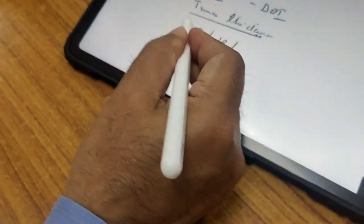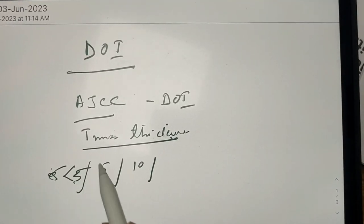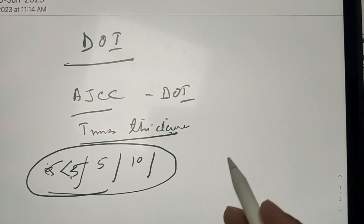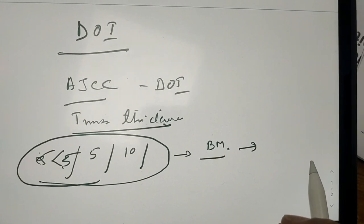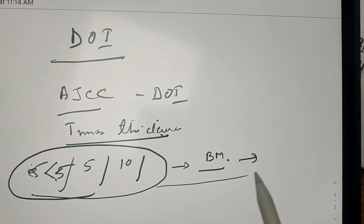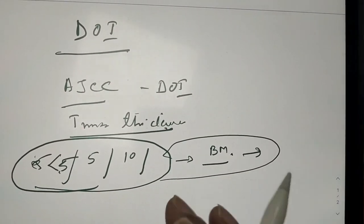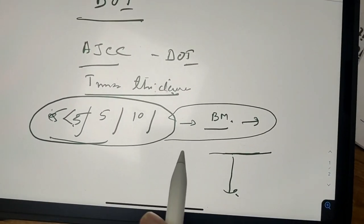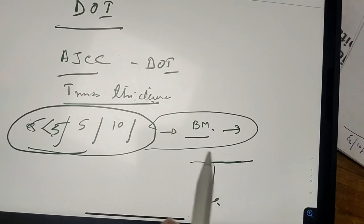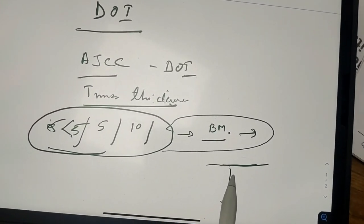For staging, the DOI thresholds are less than 5 mm, 5 to 10 mm, and greater than 10 mm. All of this is based on distance from the basement membrane downward. This is what the AJCC 8th edition states. The oncological significance of DOI is what we should be concerned about — it relates to depth in terms of penetration involving the lymphatics.